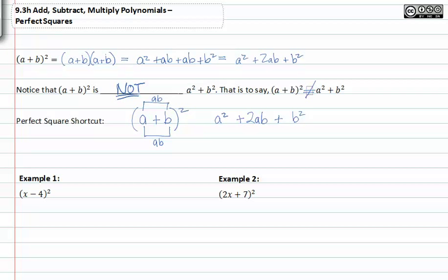Another way you can think about this is, if you have a plus b all raised to the second power, it's the first term squared, double the product of the terms, and the last term squared. That is called a perfect square.